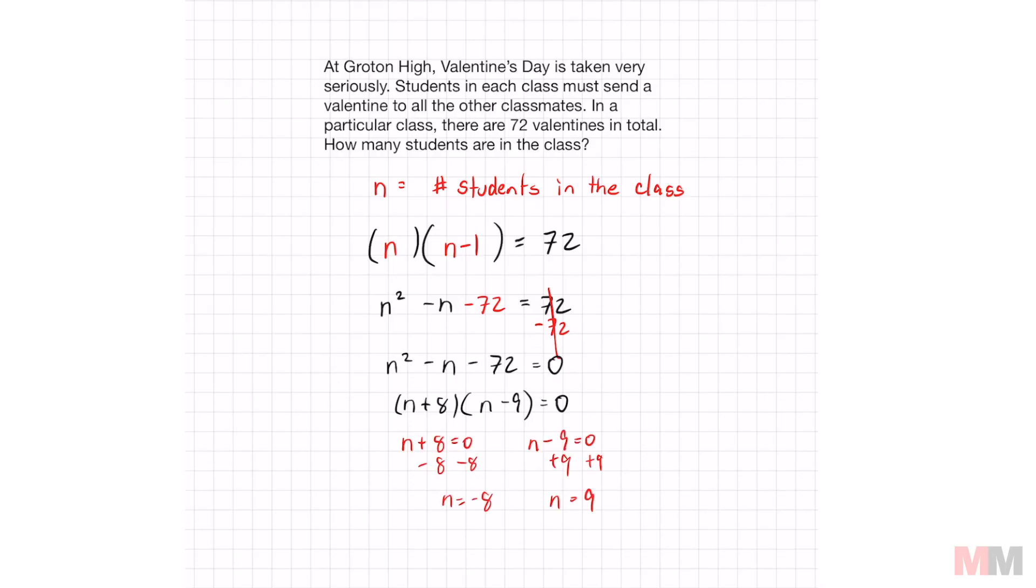Find your roots and we get those two numbers that represent how many people were in the class. That's a small class. Well, n = -8 doesn't make sense because you can't have negative 8 students. So the only one that makes sense is n = 9.